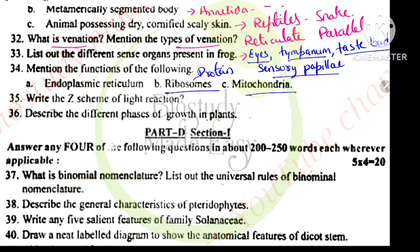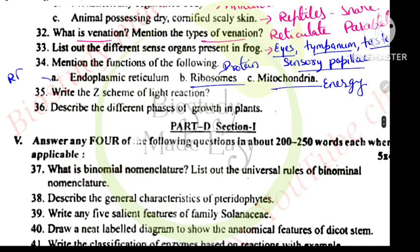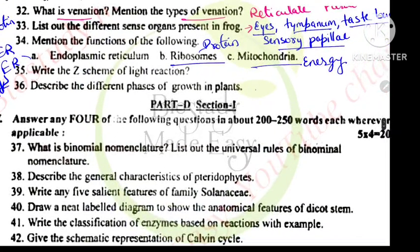Functions of ribosomes, protein synthesis. Mitochondria produces energy in the form of ATP. Endoplasmic reticulum: rough endoplasmic and smooth endoplasmic. Rough endoplasmic for proteins, smooth endoplasmic for steroid hormones synthesis.